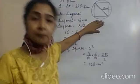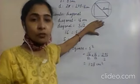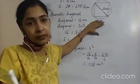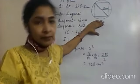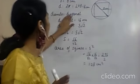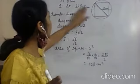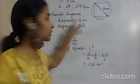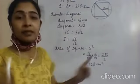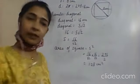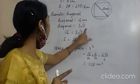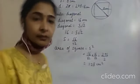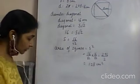The largest square is the one whose diagonal equals the diameter of the circle. So diagonal equals diameter equals 16 cm. Using diagonal equals side root 2, we find the side, and then area equals side squared gives us 128 cm².